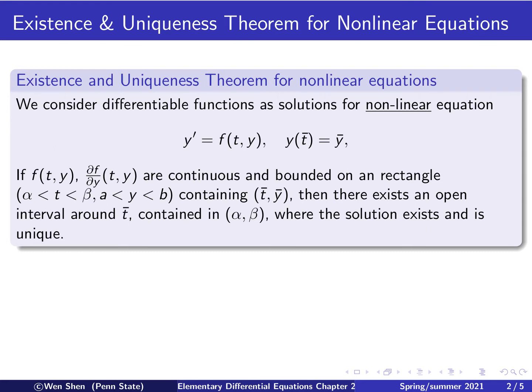Under this assumption, we now have the following conclusion. We conclude that there exists an open interval around t bar, so that this t bar is in that interval, where the initial condition is given. And this open interval is contained in the interval alpha beta. Then on that interval that contains t bar but is contained in alpha and beta, we have the solution which exists and is unique.